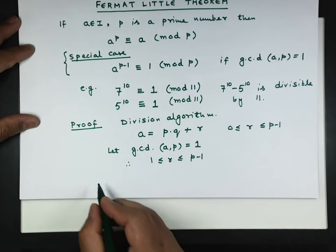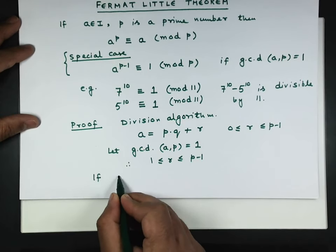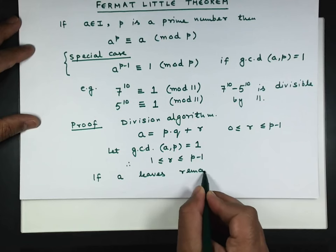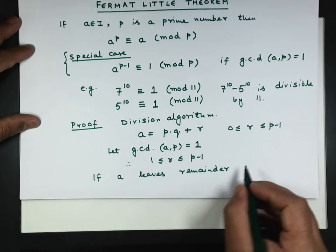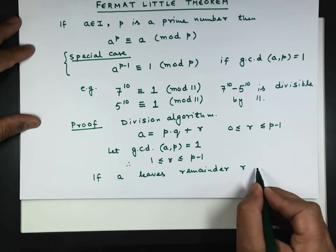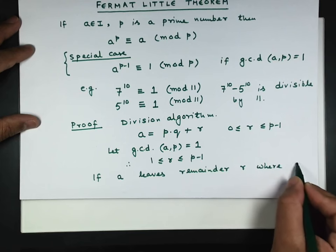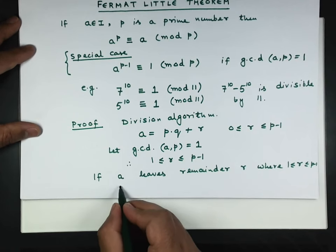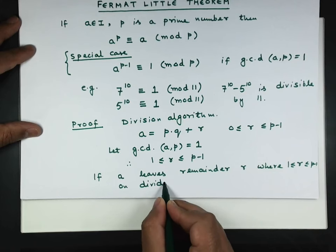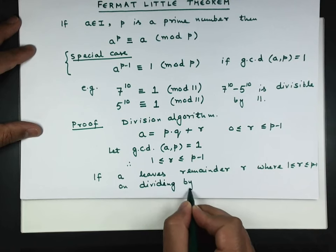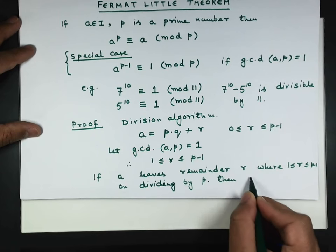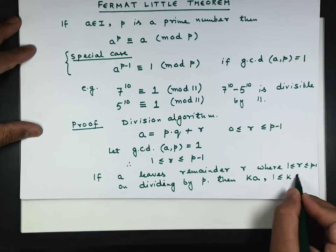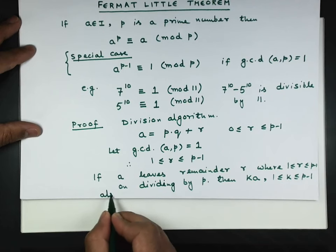Now we go by the fact that if a leaves remainder r, where r lies between 1 to p-1 on dividing by p, then ka where k lies between 1 to p-1 also leaves remainders from 1 to p-1.